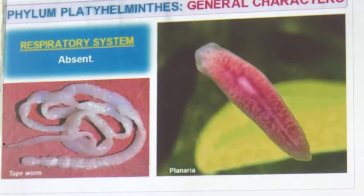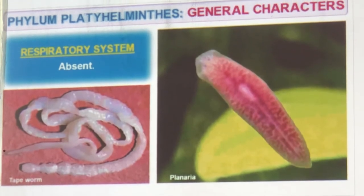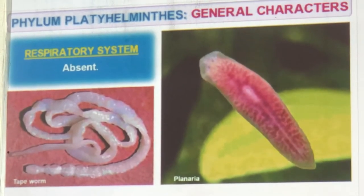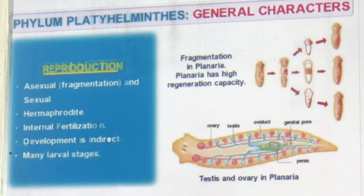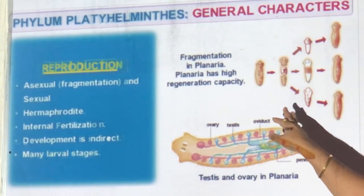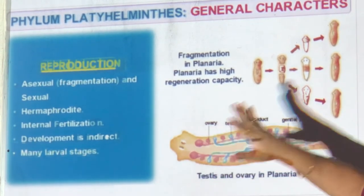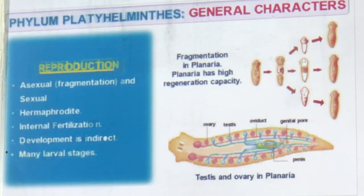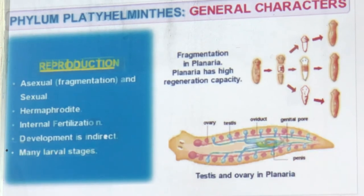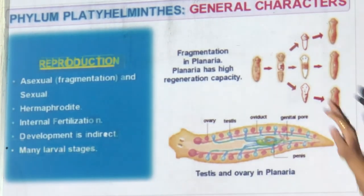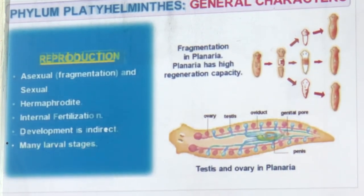You know tapeworms — from childhood you take tablets to remove tapeworms from your intestine. Reproduction: asexual by breaking (fragmentation) and sexual. They are hermaphrodite — male and female in the same body. Fertilization is internal, and many larval stages are present — metamorphosis is seen. The body has a penis, oviduct, ovary, and testes all inside its own body.